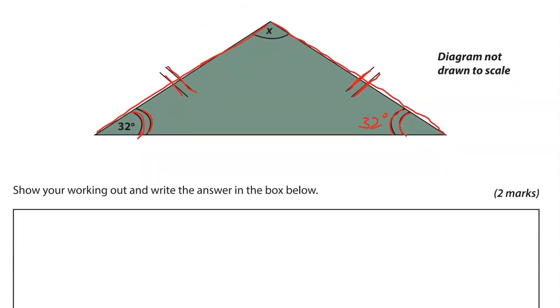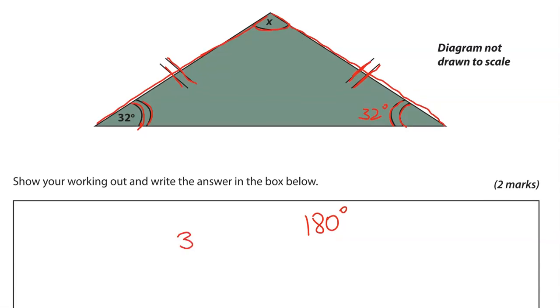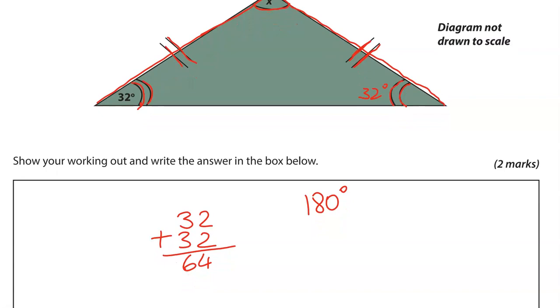Now we need to work out angle X. We know that in total, the angles within a triangle will add up to 180. So we've got 32 and 32, which gives us 64. If we take away 64 from the 180, it should give us the value for angle X. So 180 take away 64. We're going to take away 4 from the 0, which means we've got to borrow 1 from the 8. So that becomes a 7, 0 becomes 10. 10 take away 4 gives us 6, 7 take away 6 gives us 1, 1 take away 0 is 1. So 116 degrees.